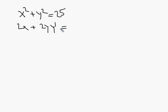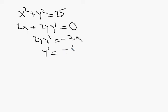The derivative of 25 is 0. Solving for y prime: subtract 2x, giving 2y·y' = −2x, so y' = −x/y because the 2s cancel. If you think about it geometrically, this makes a lot of sense — the slope is always tangent to the radius for a circle centered at the origin.